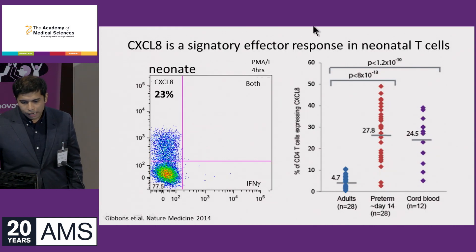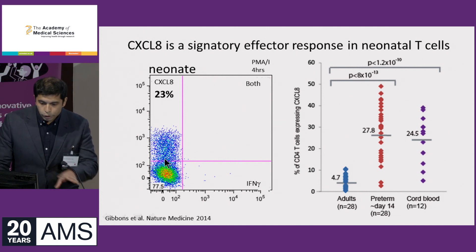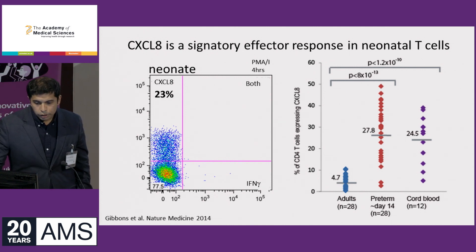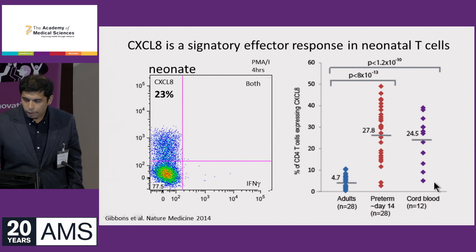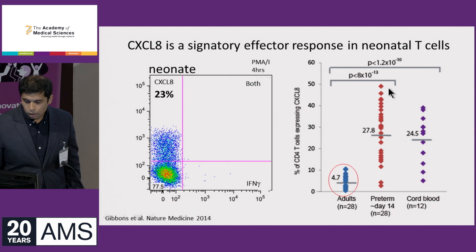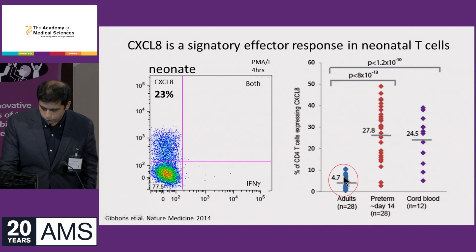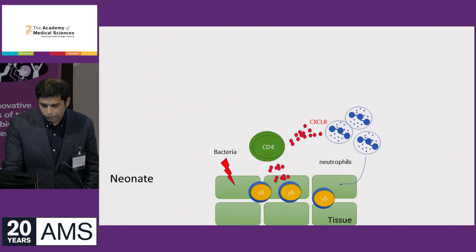In our lab we were the first to show that, rather than being anti-inflammatory or immature, neonatal T-cells produce a large amount of a pro-inflammatory chemokine called CXCL8. In this representative neonate it's about 23%. If you look at preterm or term — as represented by cord blood — you can see that the percentage of T-cells producing CXCL8 is about a quarter up to half of these cells, whereas the percentage is actually quite low in the adult. So this is a distinct phenotype within the neonatal T-cell.